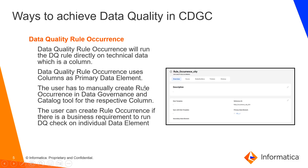Now let's see what are all the ways to achieve data quality in CDGC. There are three ways: data quality rule occurrence, data quality rule template, and scorecard rule occurrence.